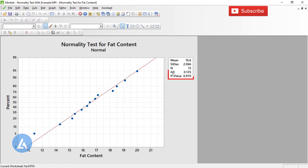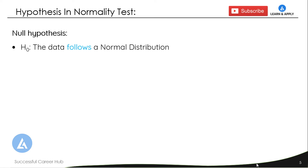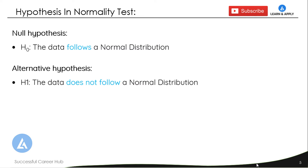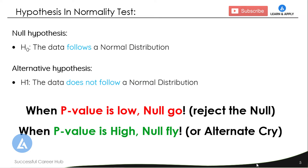Here we get the normal probability plot for fat content. The Anderson-Darling AD value is 0.135 and the corresponding P-value is 0.970. Before interpreting this, you must know the hypotheses in a normality test. The null hypothesis H0 states that the data follows a normal distribution, while the alternative hypothesis H1 states that the data does not follow a normal distribution. When the P-value is low, we reject the null hypothesis; when the P-value is high, we fail to reject the null hypothesis and go with the conclusion that data is normal.